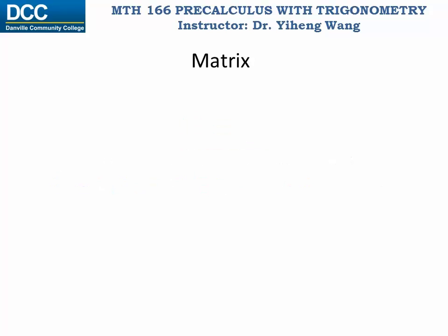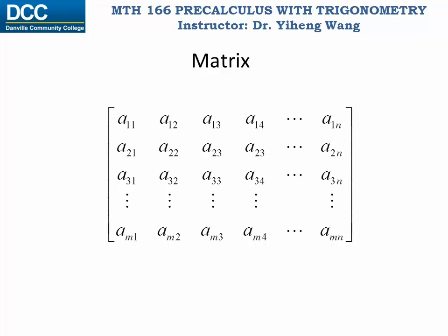First let's quickly look at the definition of a matrix. A matrix is a group of real numbers organized in a rectangular array. Each horizontal line of numbers in the matrix is a row, and each vertical line in the matrix is a column.